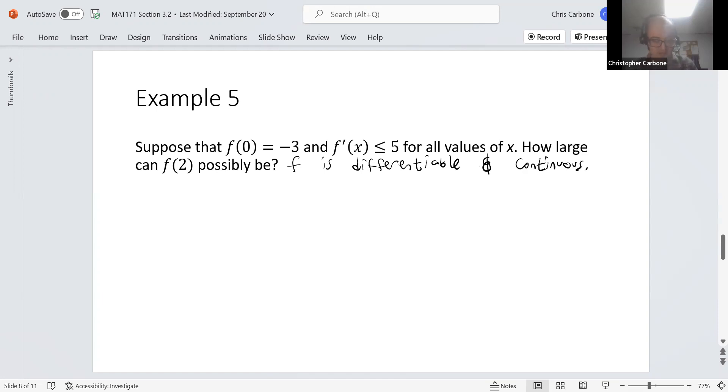To apply the Mean Value Theorem, we need f(2) - f(0) = f'(c)(2 - 0). In our case, we can move over that f(0), so f(2) = f'(c) × 2 + f(0).